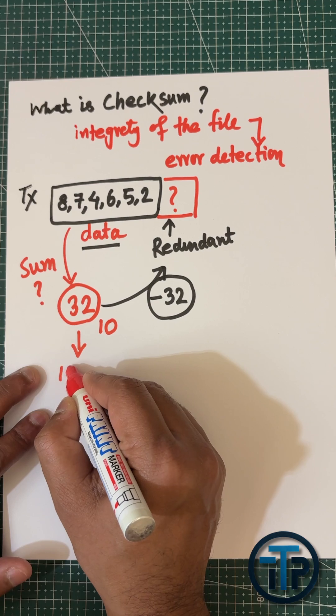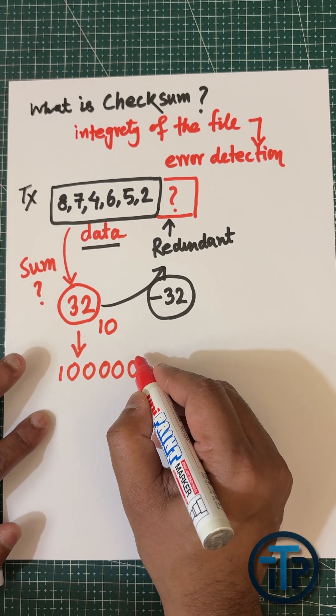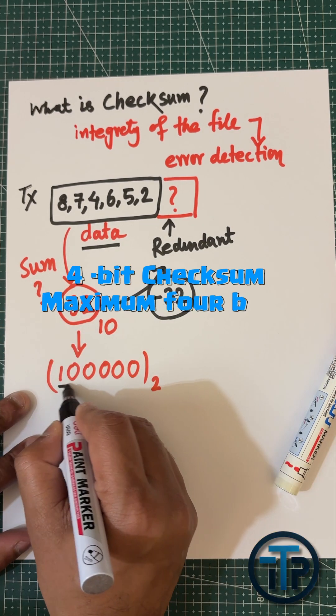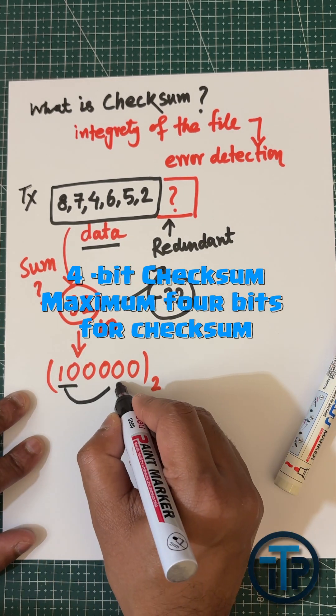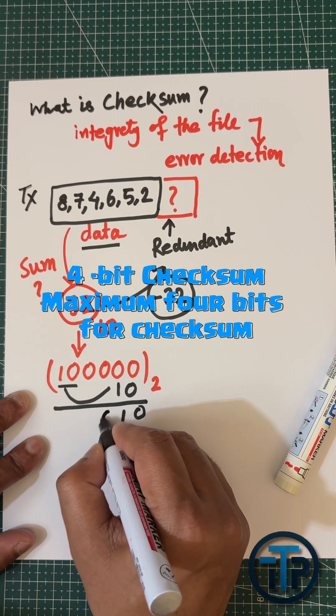Now take an example. If we have to do the four-bit checksum, first we convert it to the binary one. Since it is a four-bit, maximum four bits you can use for the checksum.